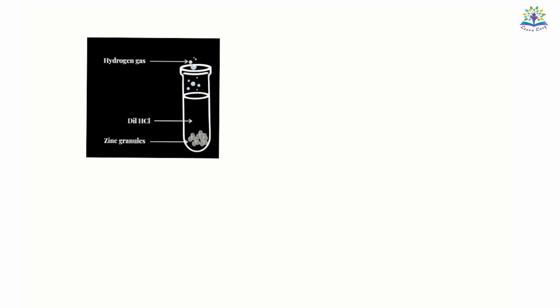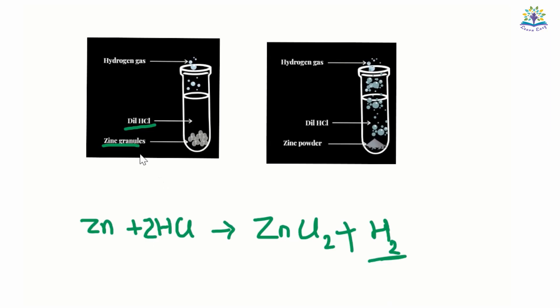When we add zinc to dilute hydrochloric acid, zinc chloride and hydrogen are formed. But if you add zinc powder instead of zinc granule, the speed of the reaction increases. This can be observed with hydrogen gas formed at a faster rate. When zinc is powdered, the surface area that is in contact with the other reactant increases. This helps in speeding up the reaction.